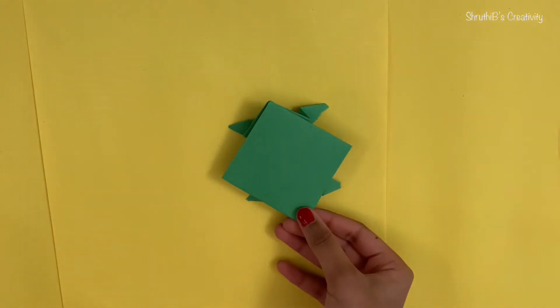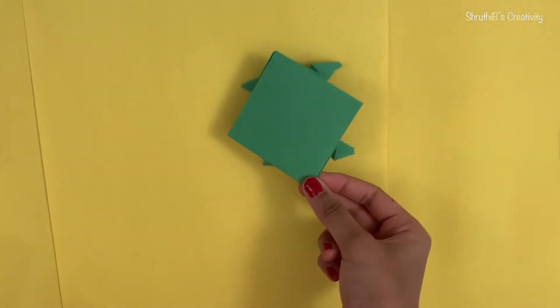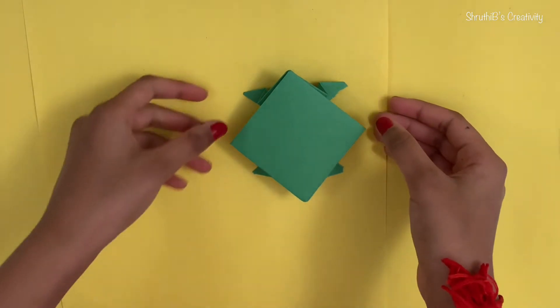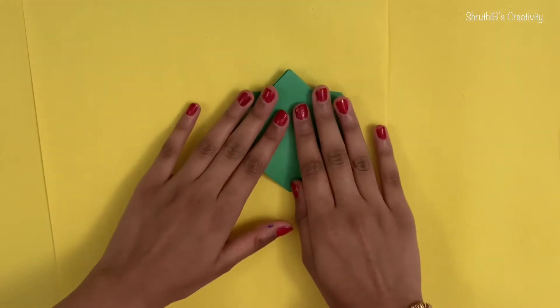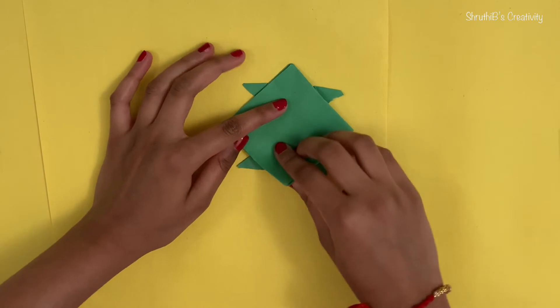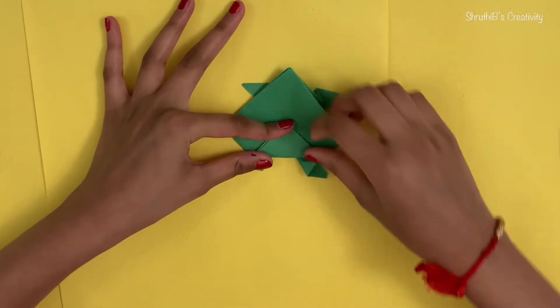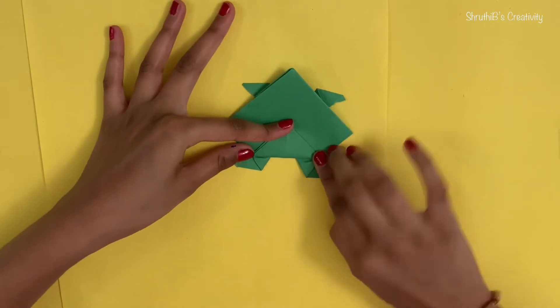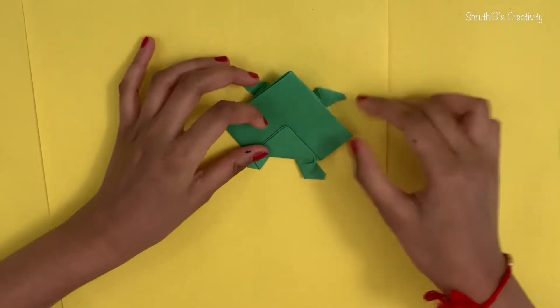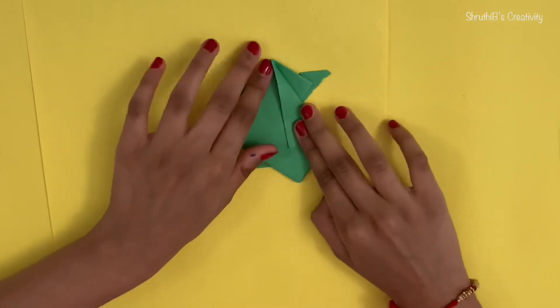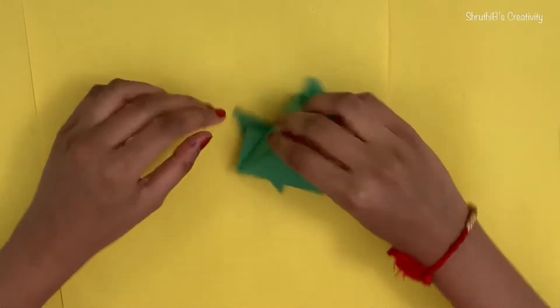So as you can see, we've made our frog legs, so it can actually really stand if we put the legs on. And now, now we're going to take this tip and you're going to just fold it upwards. Again, like this, and then you're going to unfold this and going to make folds like this.